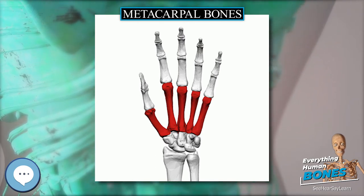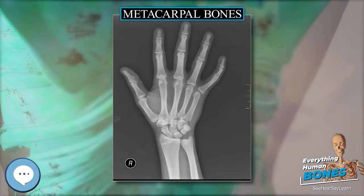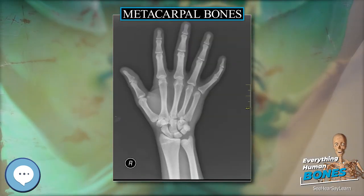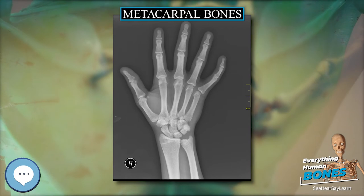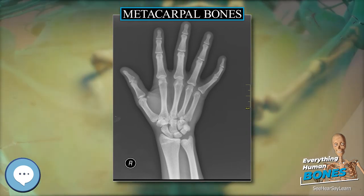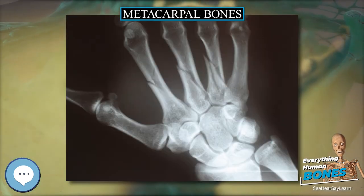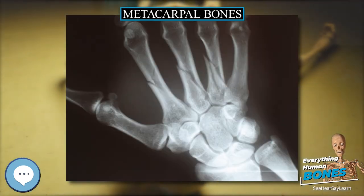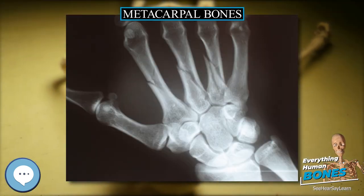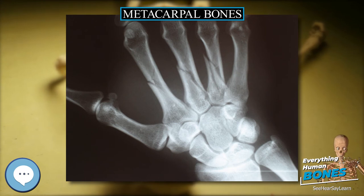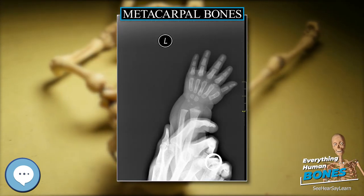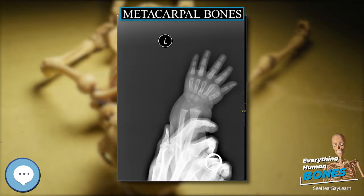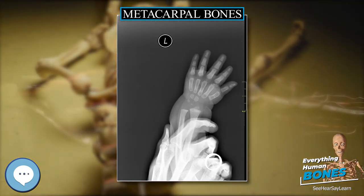Fracture: fracture of the neck of a metacarpal is a common location for a boxer's fracture. In four-legged animals, the metacarpals form part of the forefeet and are frequently reduced in number appropriate to the number of toes.